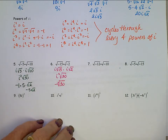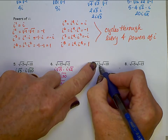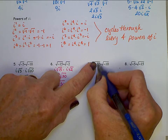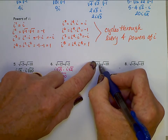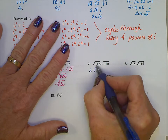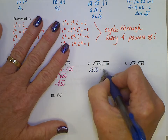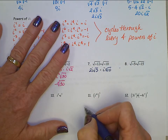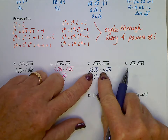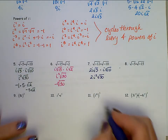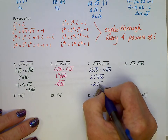For square root of negative 12 times square root of negative 10: square root 12 is square root 4 times square root 3, so that's 2 square root 3. Then times the square root of negative 1, which is i. Times i square root 10. Multiplying gives us 2i squared times square root 30. i squared is negative 1, so that's negative 2 square root 30. Square root 30 does not break down, so we leave it right there.